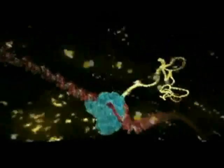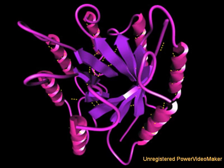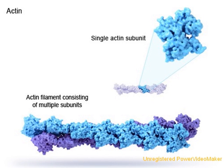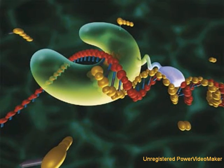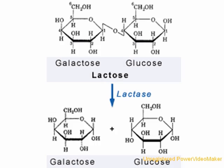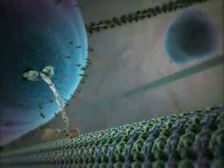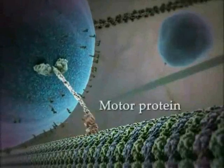A gene can simply be defined as a stretch of DNA that is transcribed into RNA, and most RNA is then translated into protein. Each protein is a unique contiguous chain of amino acids evolved to perform some task in the cell. Some proteins act as structural support. Some proteins copy the DNA. Some proteins help metabolize sugars. And some proteins are motors that move cargo around inside the cell.